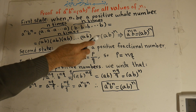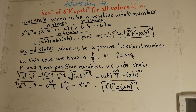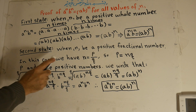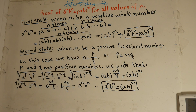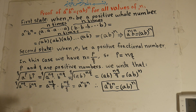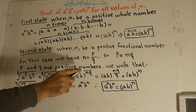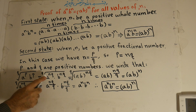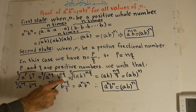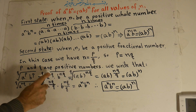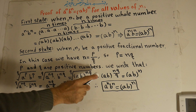When n is a positive fractional number, in this case we have n equal to p over q, because p over q is a fractional number, so p is equal to n times q. P and q are positive numbers. We write that a to the power of p times b to the power of p under the q-th root equals a to the power of nq times b to the power of nq under the q-th root, which equals ab to the power of nq all under the q-th root.